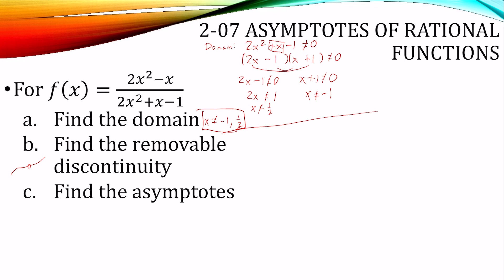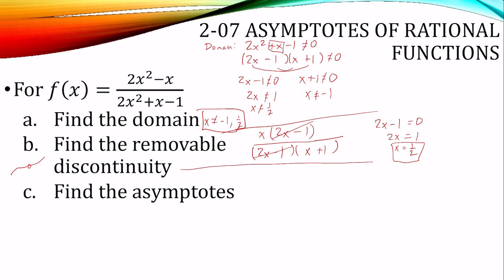For the removable discontinuity, take our function and factor. On the top, we can factor out x. On the bottom, we use the factored form from part a. Notice the factor 2x minus 1 cancels out. When you cancel a factor like that, that gives you the removable discontinuity. So my removable discontinuity is from the factor 2x minus 1 — set it equal to 0 and solve: the removable discontinuity occurs at x equals 1/2.